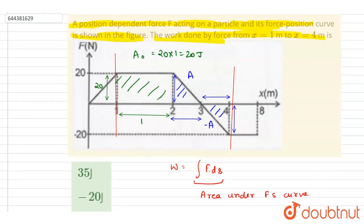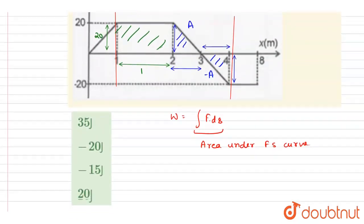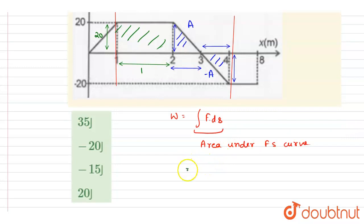From x equals to 1 to x equals to 4, and the answer of this question. Area under the curve, if you see, this area is plus A, this triangle one, and this area is minus A. So net area will be 20 joules and the answer of this question. So D is the correct one. Thank you.